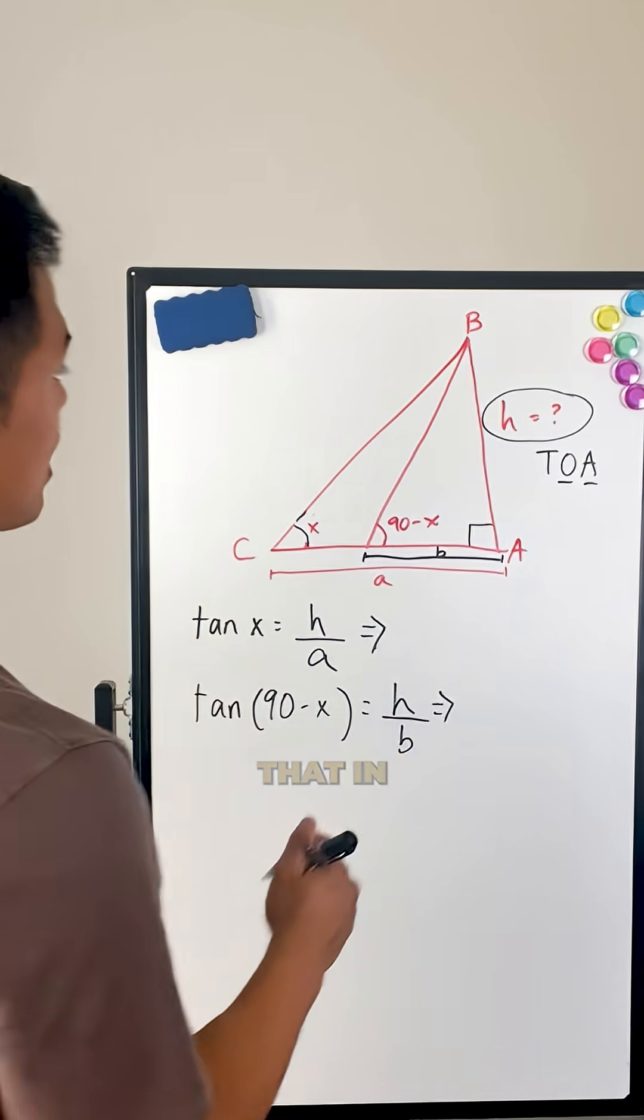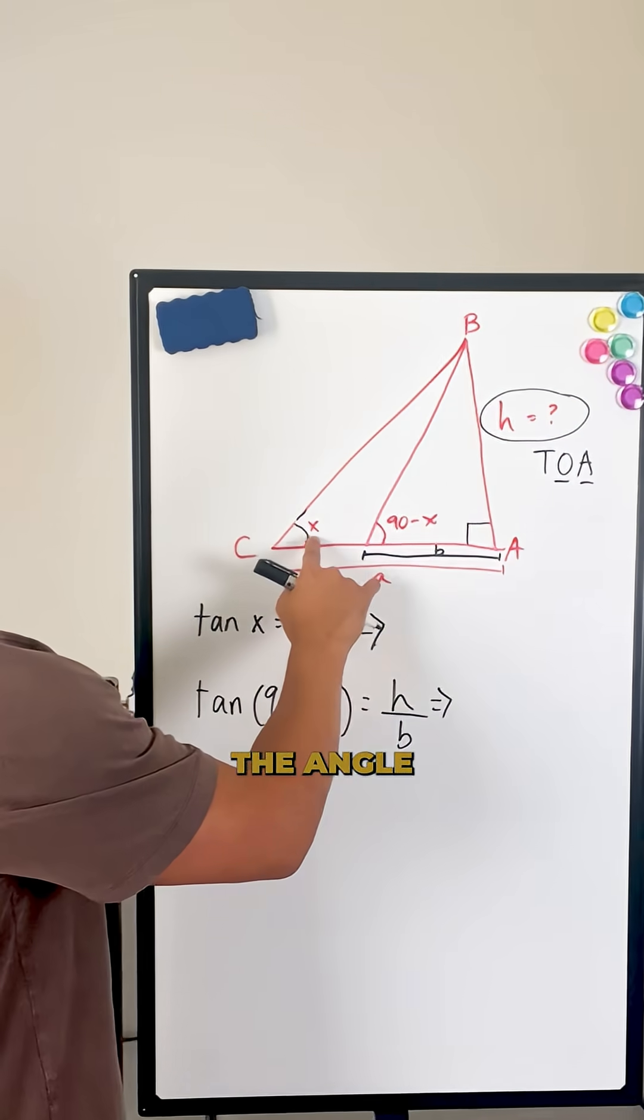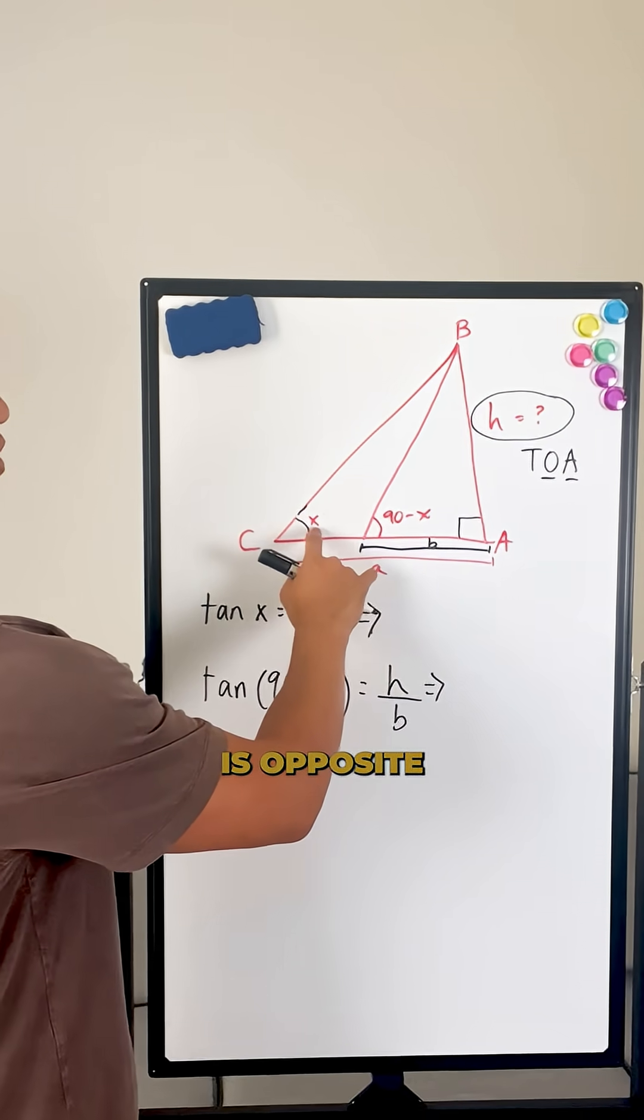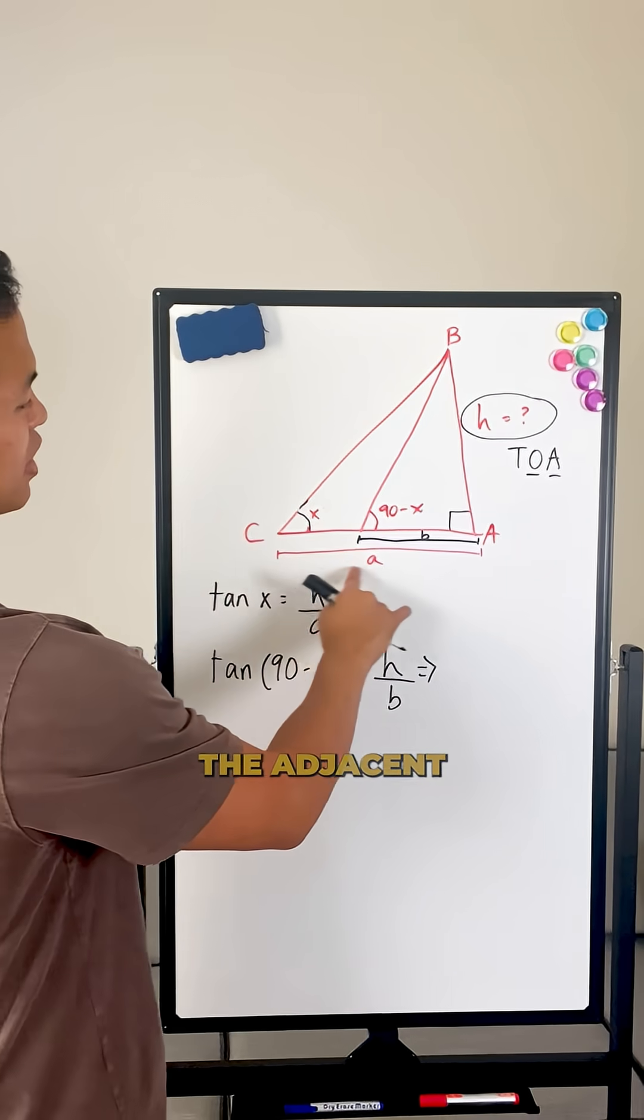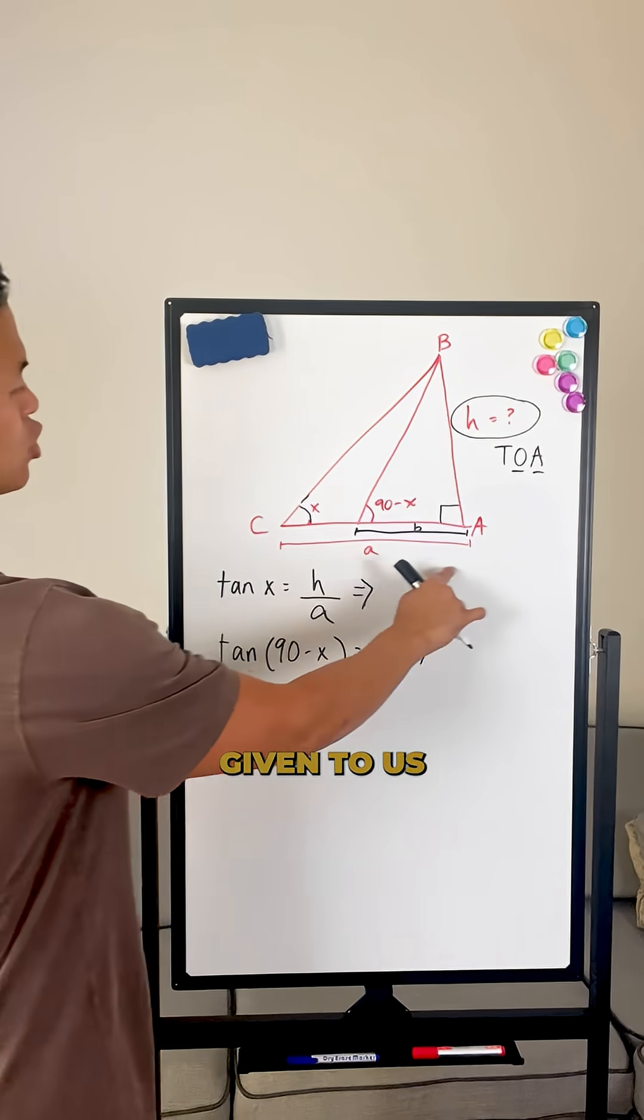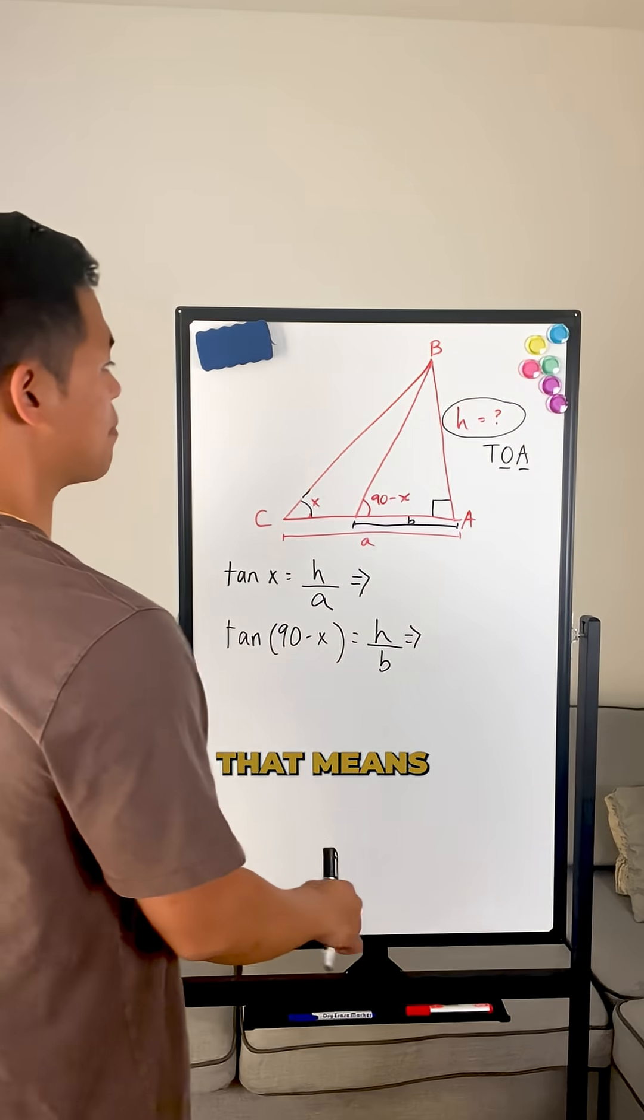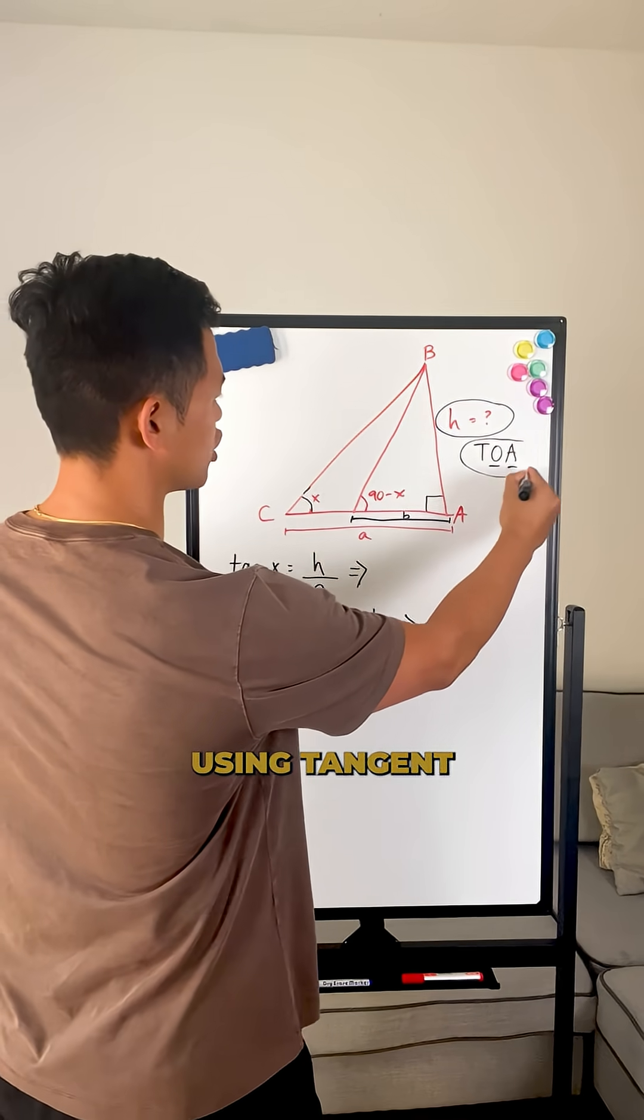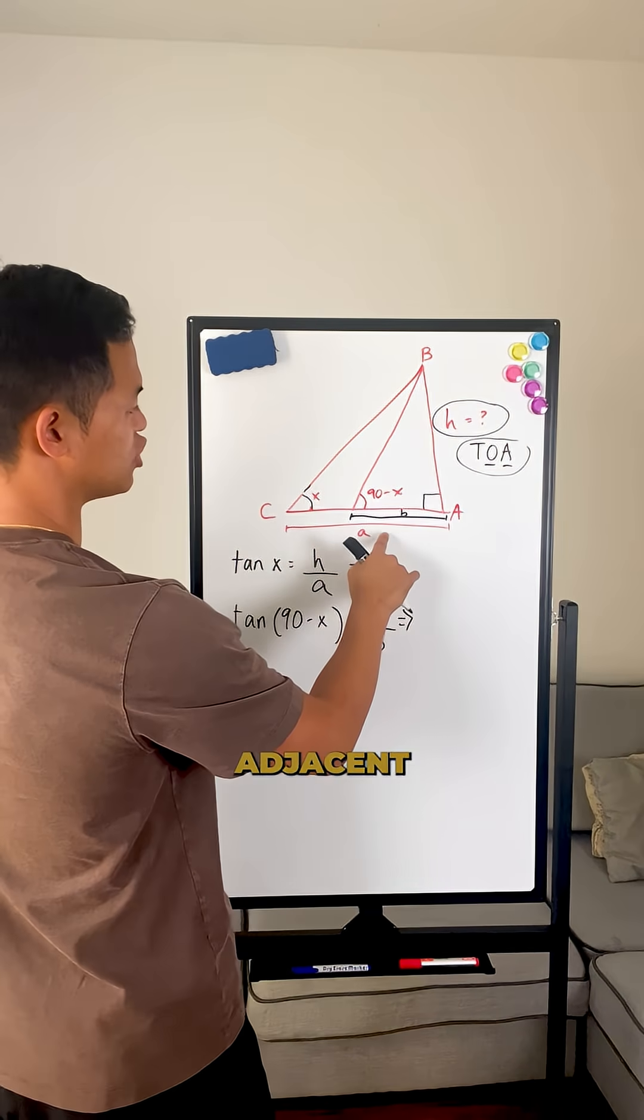Now, if we take a look at this right here, we can see that in relation to H, the angle that we're trying to solve for is opposite of it, and we have the adjacent lengths given to us as A and B, respectively. That means that we're going to be using tangent, opposite over adjacent.